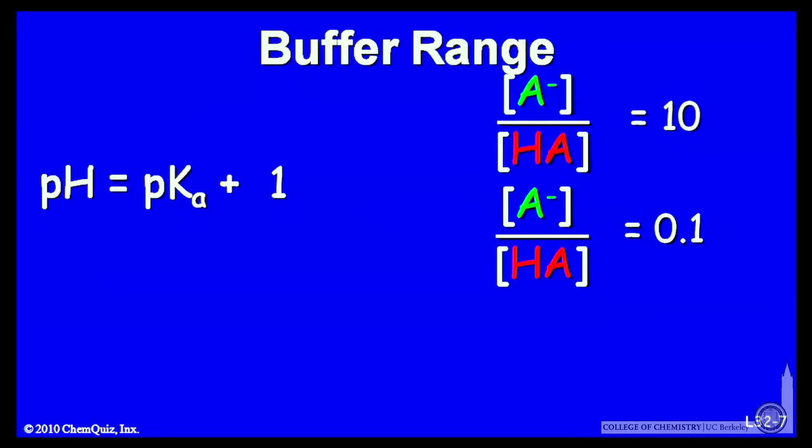Of course, if the acid form predominates, so you have 10 times as much acid as base, then that log term is minus 1. And you're in the region where the pH is pKa minus 1.